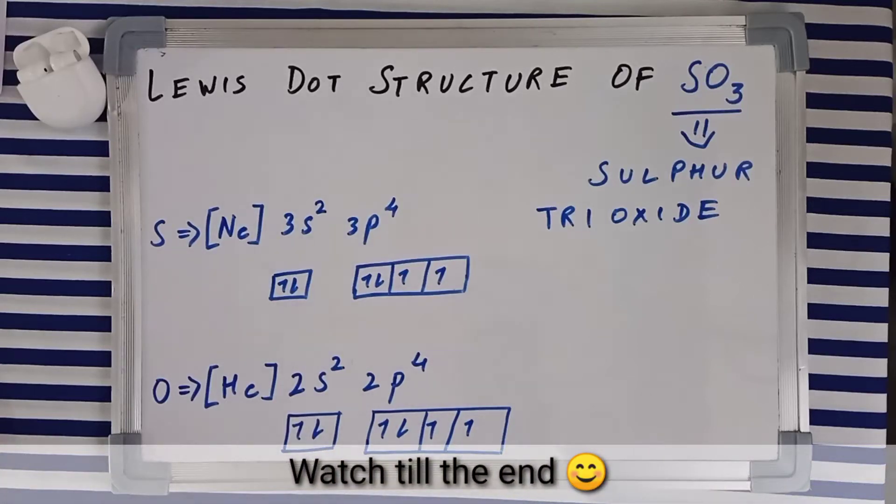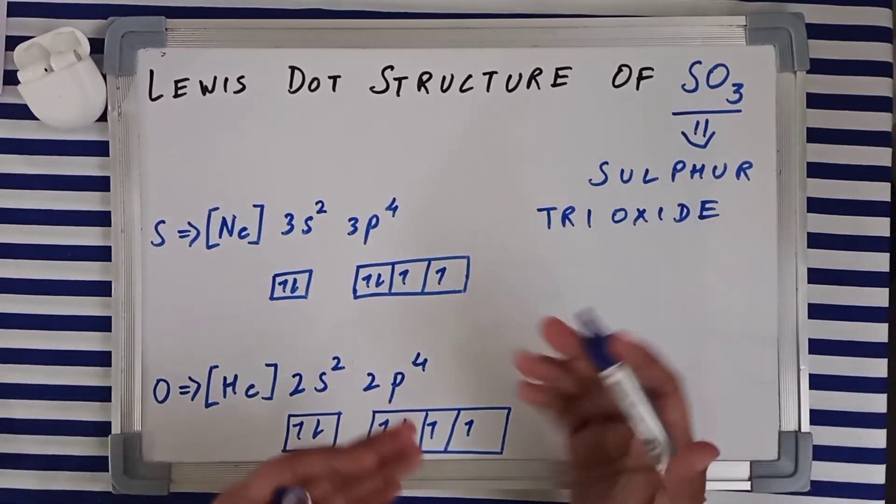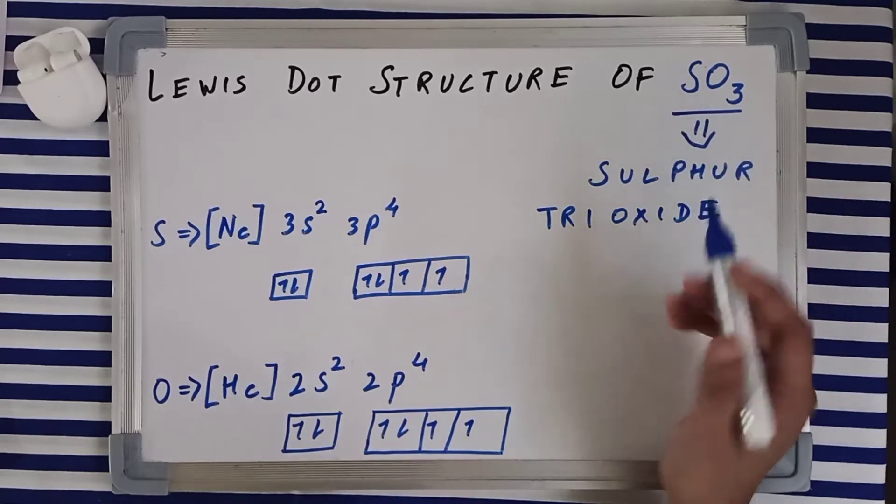Welcome back, we'll be talking about the Lewis dot structure of SO3, which is called sulfur trioxide. In order to draw the structure, we need to find out the electronic configurations of the different elements present in this particular molecule.